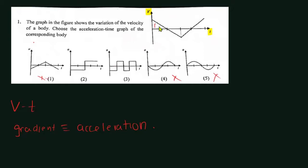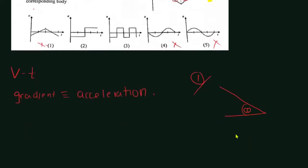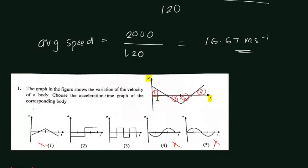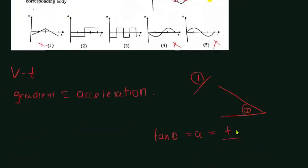I'll consider the first gradient, second gradient, third gradient, and fourth gradient. If we look at the first gradient, I'll take the angle as theta. So tan theta equals the acceleration, which is a higher value minus a lower value — that means it's positive. Higher value minus lower value means the acceleration is positive.